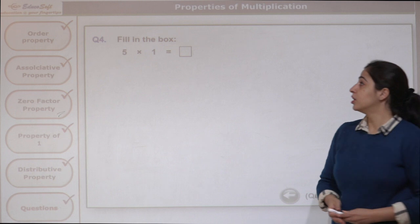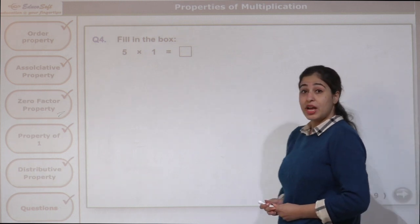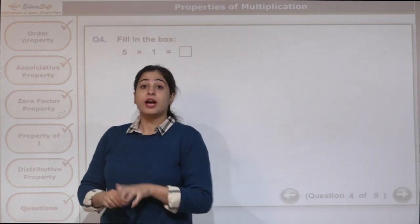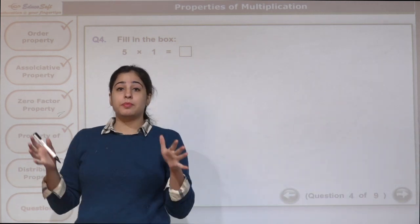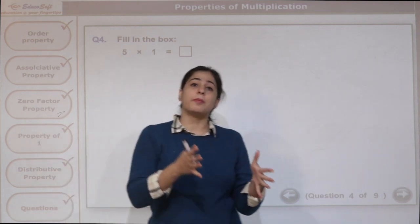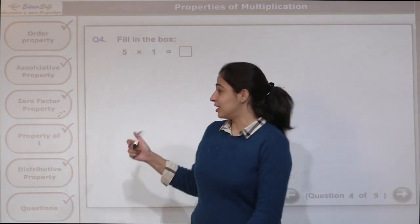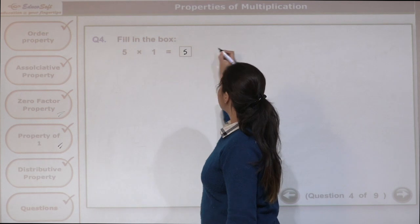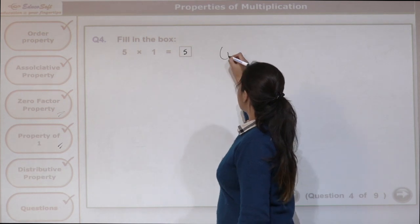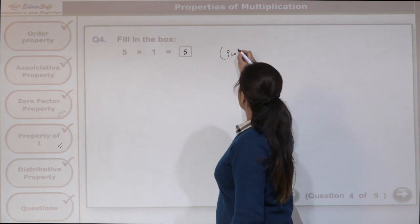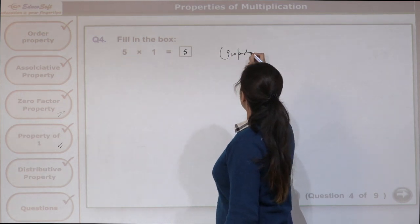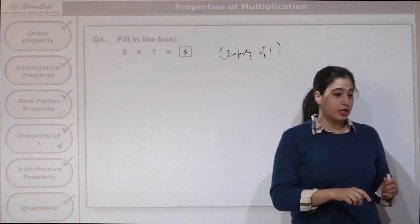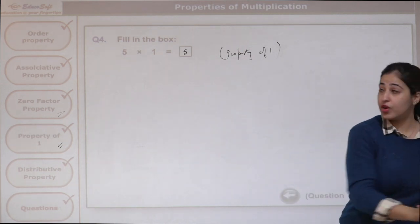5 times 1 gives what? Any number multiplied by 1 gives that number again — the property of 1. So we have 5. This is the property of 1.